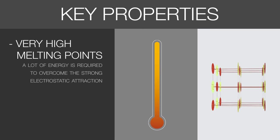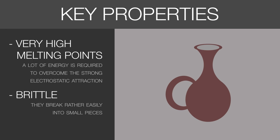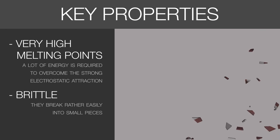Ionic compounds are also very brittle. This means that they break rather easily into small pieces. A ceramic flower vase is also brittle. If knocked over, chances are it will break into small pieces.